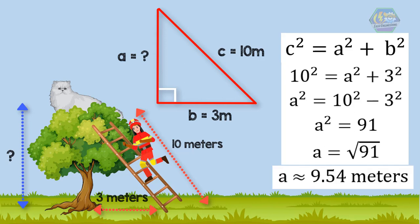The cat is at approximately 9.54 meters high. Did we get the same answer? So what do you think about the Pythagorean theorem — easy, right? That's it, guys! I hope you learned a lot. You can also watch our other videos. Once again, this is Easy Engineering — we make engineering topics easy and fun for you.